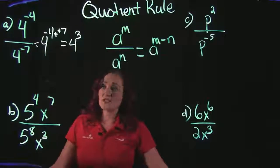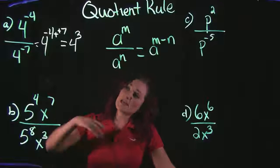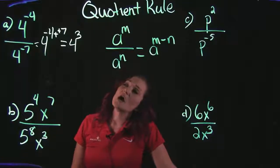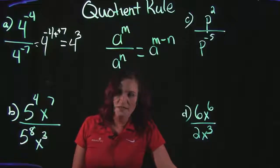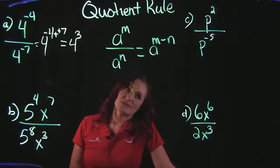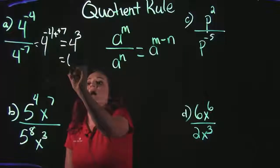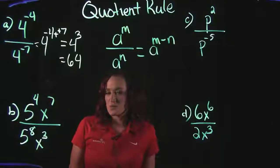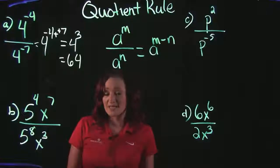Now depending on how the answer is expected to be left, if it likes it in exponential form, 4 to the third power is fine. Otherwise, you would go ahead and multiply this out. 4 times 4 is 16, and 16 times 4 is 64. So either one of these is a good answer, just depending on what the specific problem is asking.